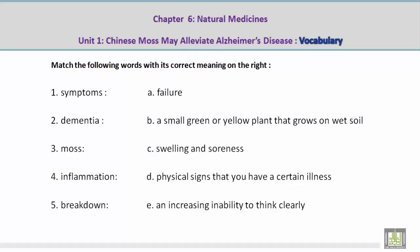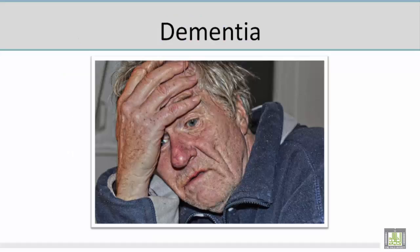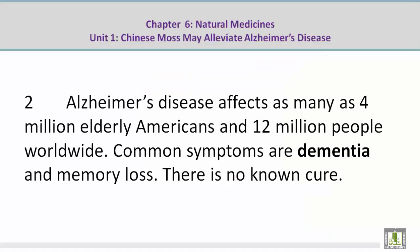Number 2: Dementia. Mohamed, please give the correct meaning on the right. E — An increasing inability to think clearly. Now let's take a look at a picture related to the vocabulary word 'dementia.' Mohamed, could you please talk about this? I see this old man holding his head — he's having trouble thinking clearly, and that is what dementia means: increasing inability to think clearly. Now let's take a look at a paragraph related to the vocabulary word 'dementia.' Common symptoms are dementia and memory loss.